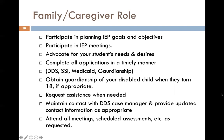The family and caregivers also have a role to play. They should be participating in planning IEP goals and objectives, attending IEP meetings, and being an advocate for the student's needs and desires. They should help complete applications in a timely manner, work with linking agencies such as DDS, SSI, Medicaid, or guardianship if appropriate, and obtain guardianship of the student with a disability when they turn 18. They should also request assistance when needed, maintain contact with the DDS case manager, provide updated contact information, and attend all meetings and scheduled assessments.